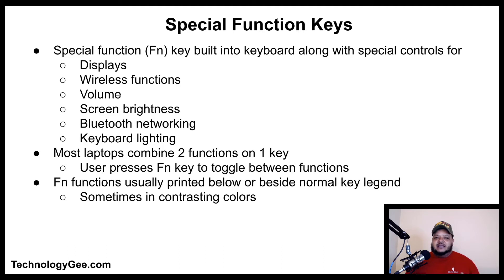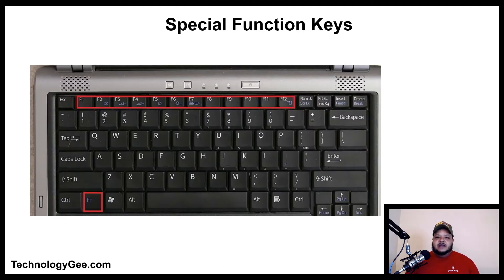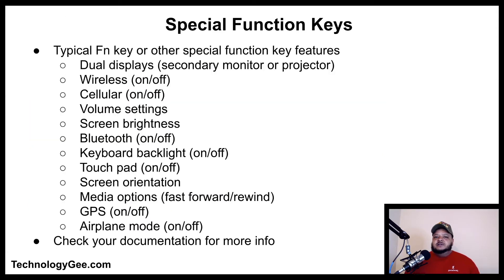Function keys are usually printed below or beside the normal key legend, sometimes in a contrasting color. Here is a screenshot of typical function keys on a laptop — they normally have the letter F on them to indicate functions, and then you have the actual function button that you press and hold to engage some type of action.